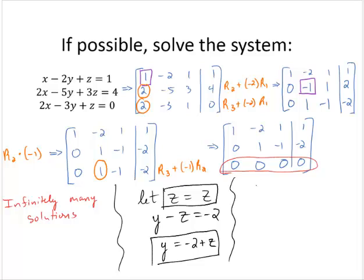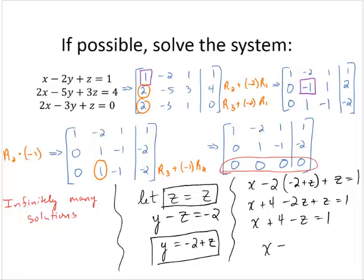Now let's solve for x. We know that x minus 2y, well y is negative 2 plus z, plus z is equal to 1. x plus 4 minus 2z plus z is 1. x plus 4 minus z is 1. Subtracting 4 and adding z, x is equal to negative 3 plus z.